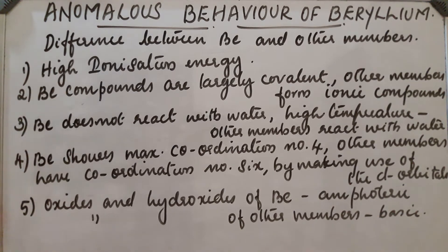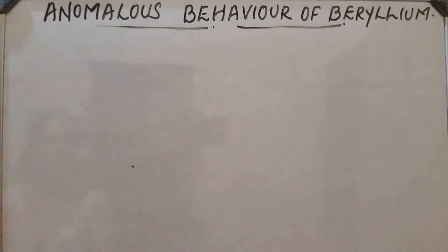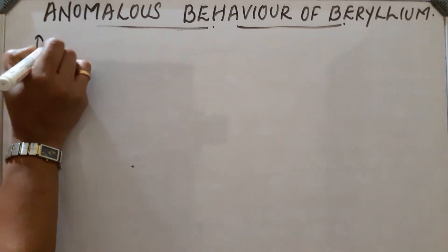These are the differences between beryllium and other members. Now, considering beryllium and aluminium, their sizes are almost similar. Due to their similar size, they show a diagonal relationship, and because of this diagonal relationship, they show similarities in their properties.